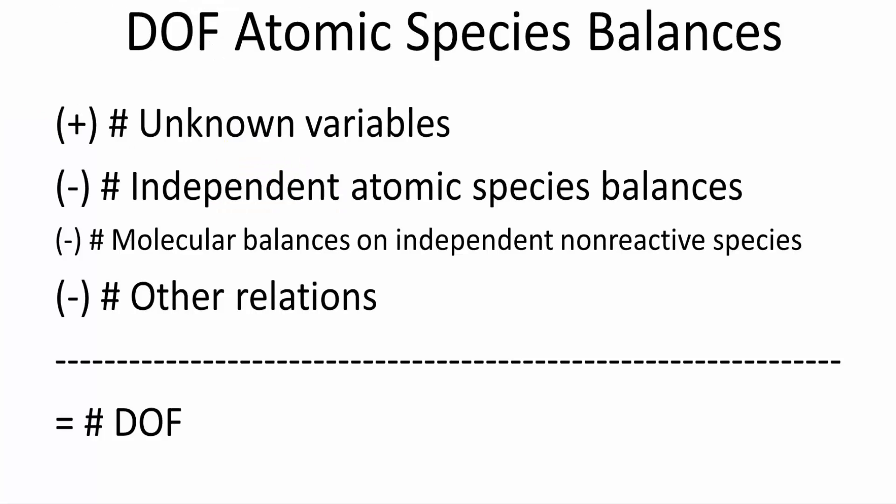In this problem, we will solve an example atomic species balance problem. If you want, you can pause the video here and attempt to solve this problem using atomic species. So let's get started. Just a recap for atomic species: if we want to solve an atomic species balance, this is how we first get the degree of freedom. You can pause the video here and review.